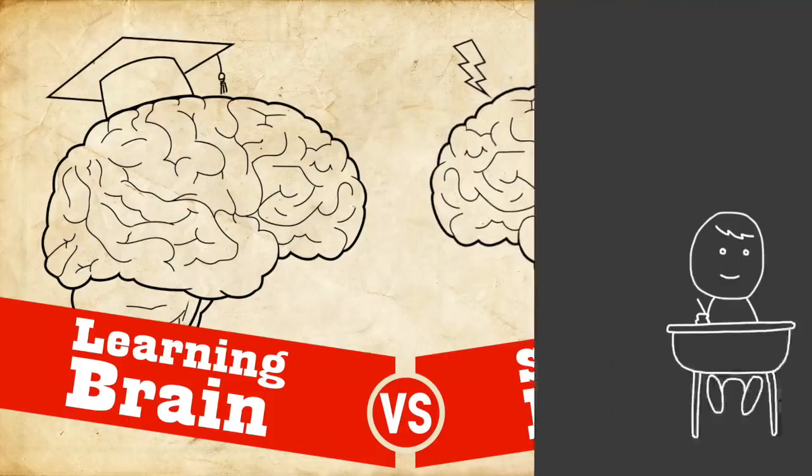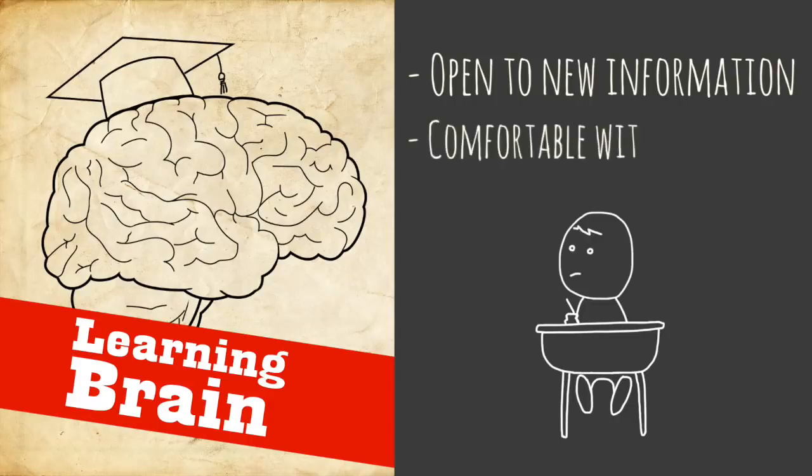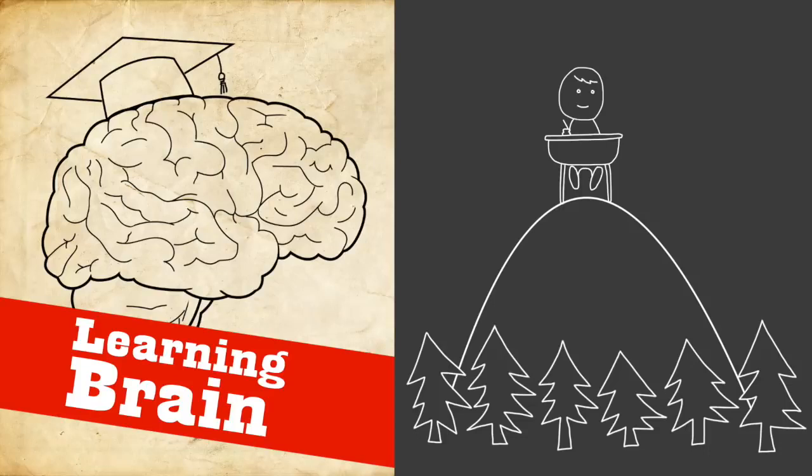So learning brain is this brain that's open to learning new information and it's completely okay with ambiguity and grayness and vagueness. And it sees the big picture. It pulls back and is on the balcony, can look over the forest and figure out what's going on.